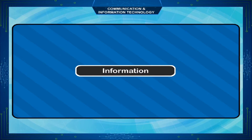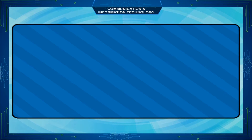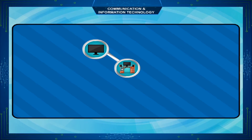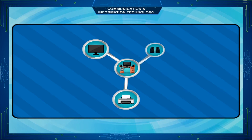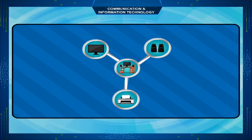Information. Information is the processed data — the output we receive from the computer. It is the meaningful form of data.